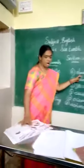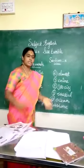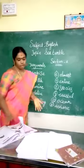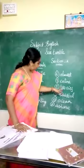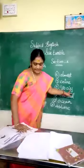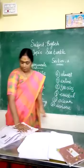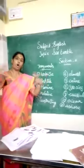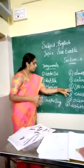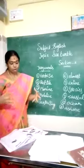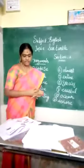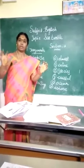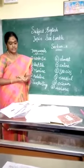Next keyword: almost, meaning just less than a full amount. Next: species, meaning a group of animals with common features — a group of animals. That's what species means.